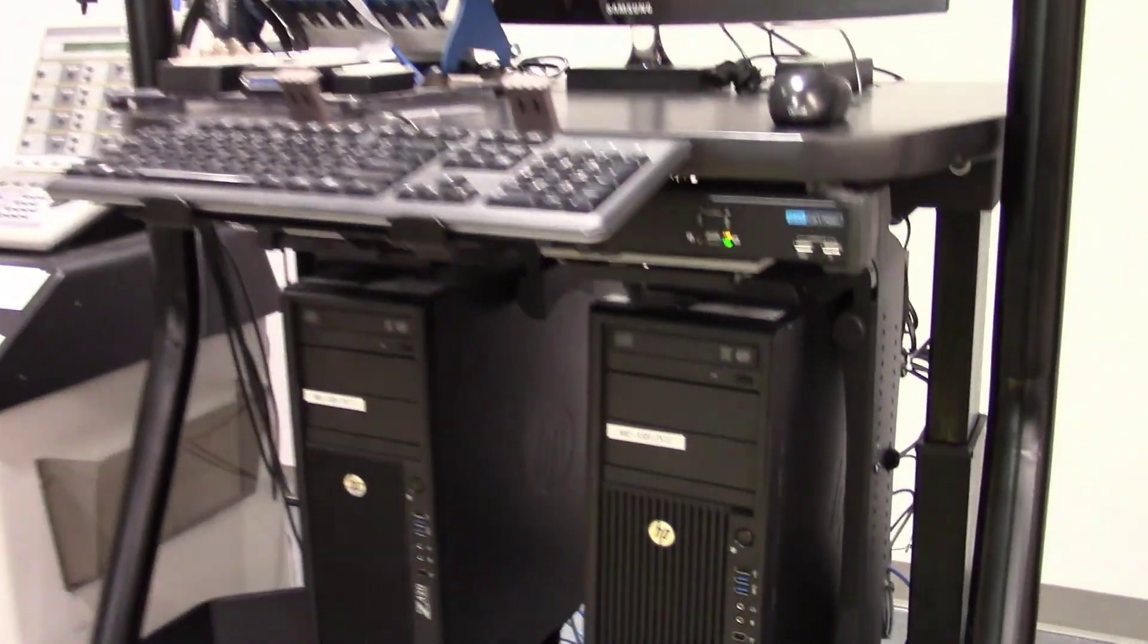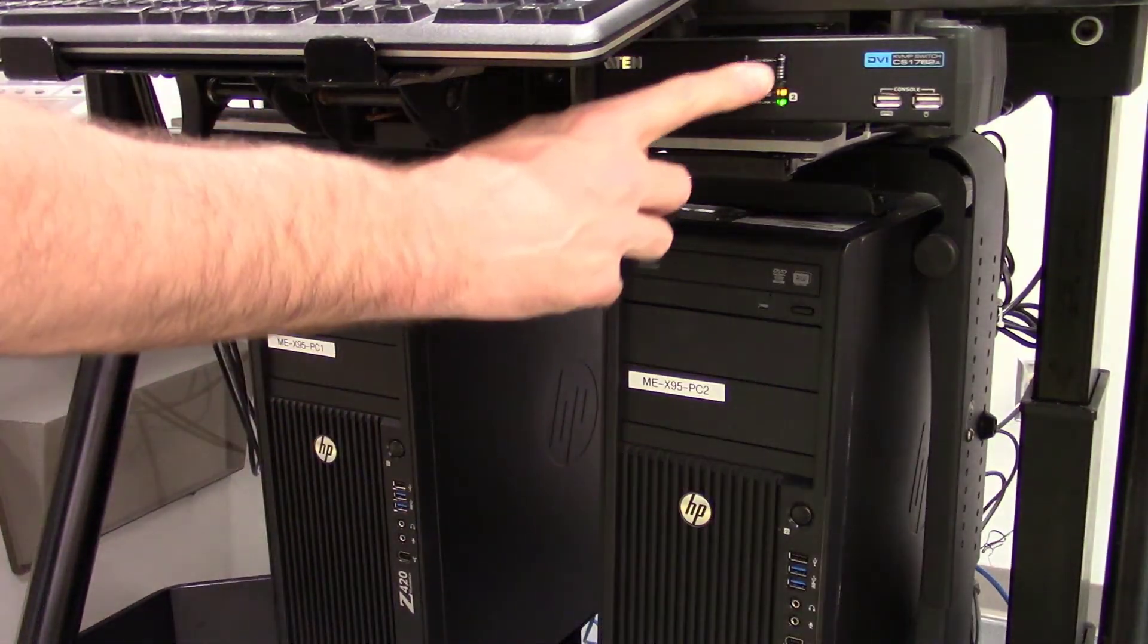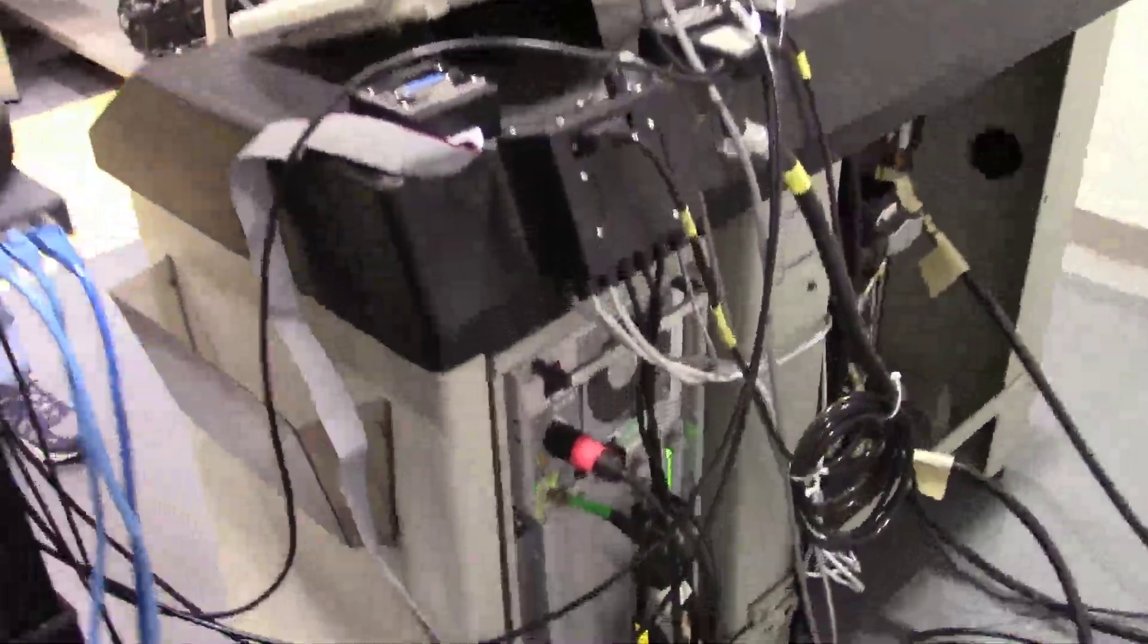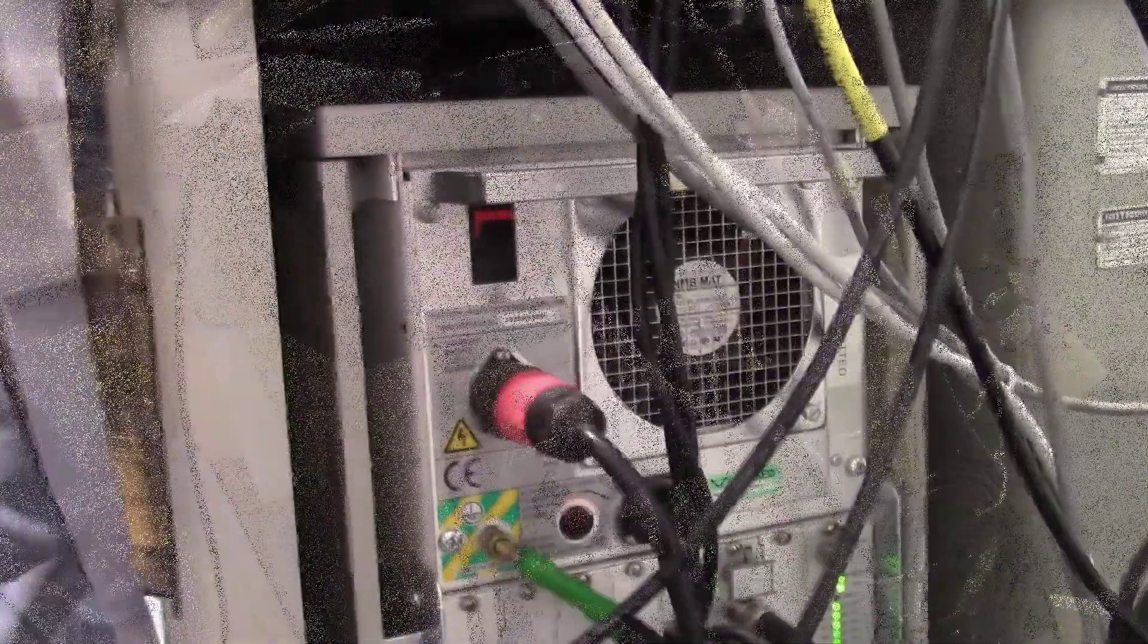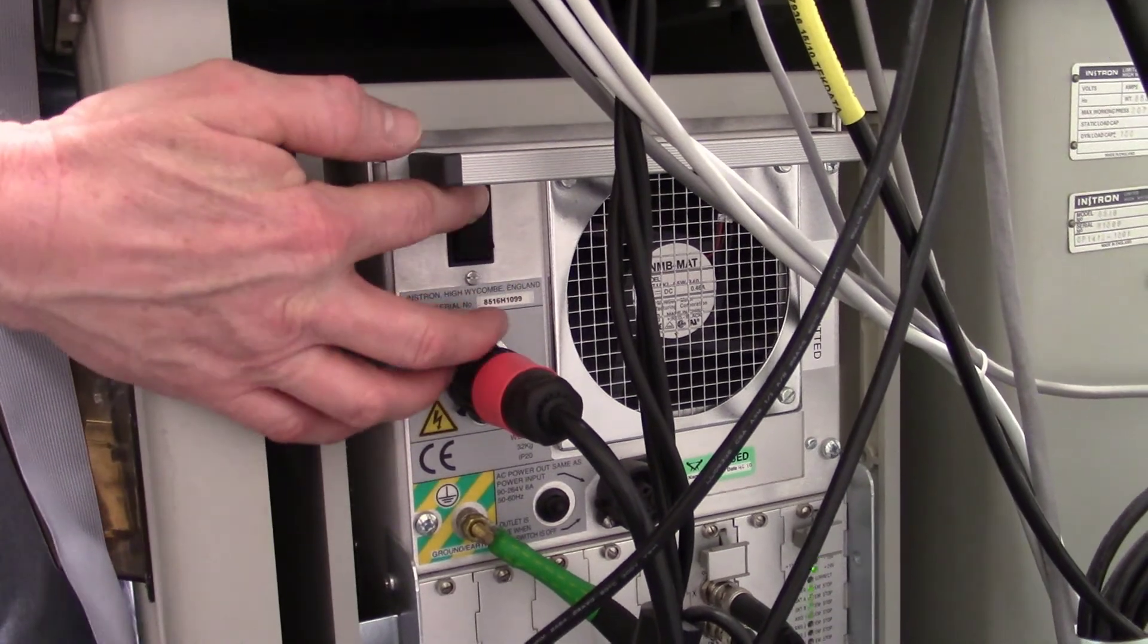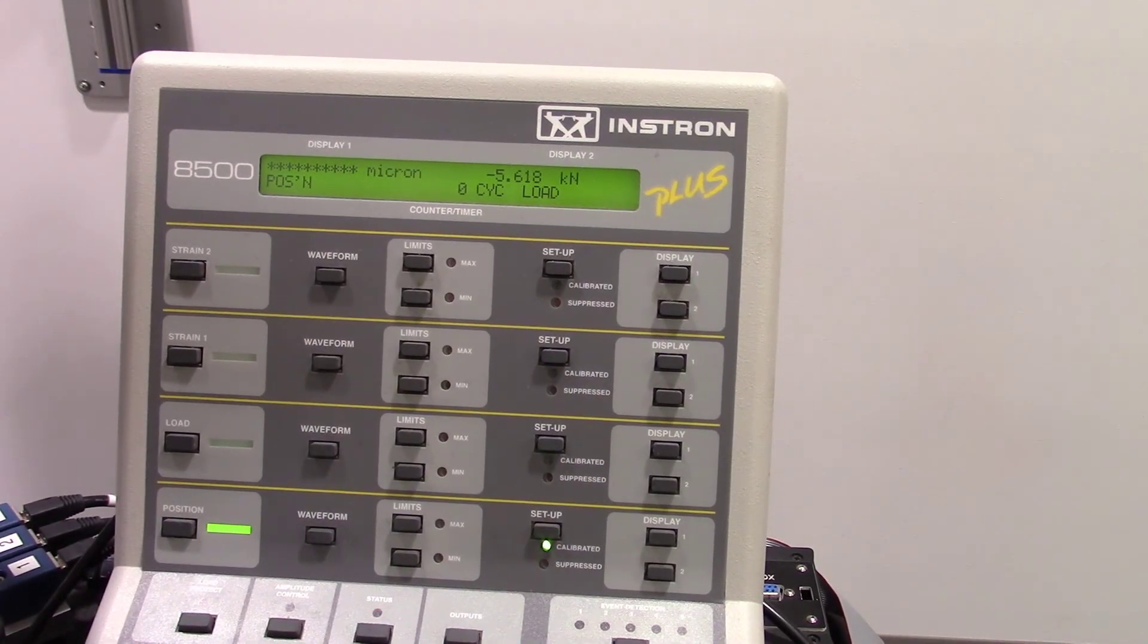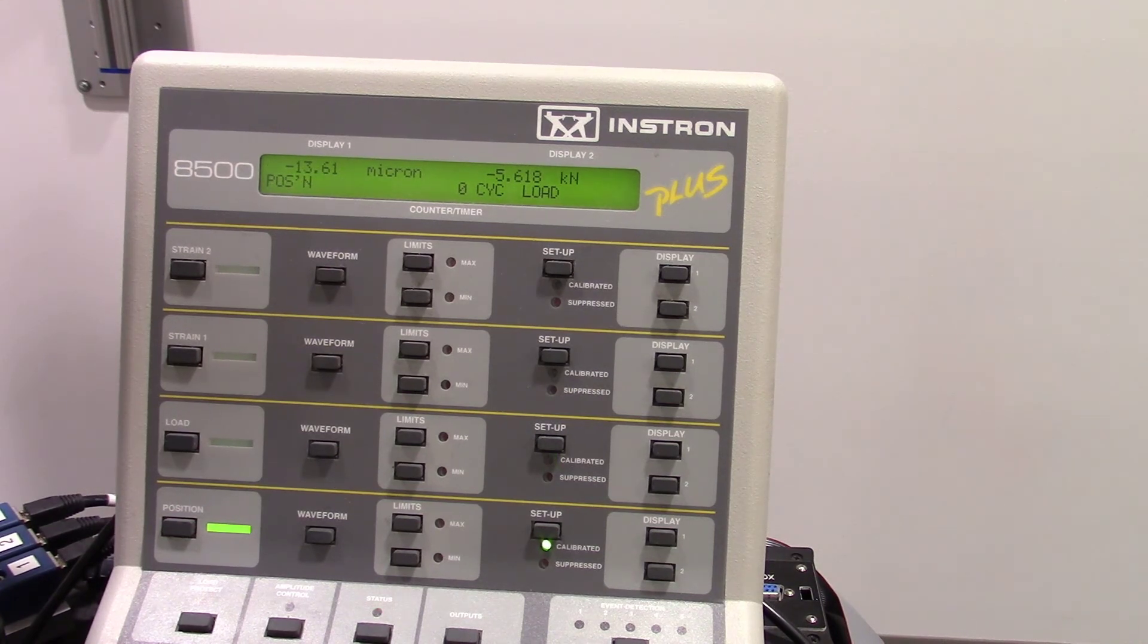Press button number 1 on the KVM switch and then turn on the left computer. To power up the INSTRON, toggle the switch located at the rear of the controller towards the top. The INSTRON will take a few minutes to boot up. When ready, RAM position and load should be displayed at the top with the units of millimeters and kilonewtons.